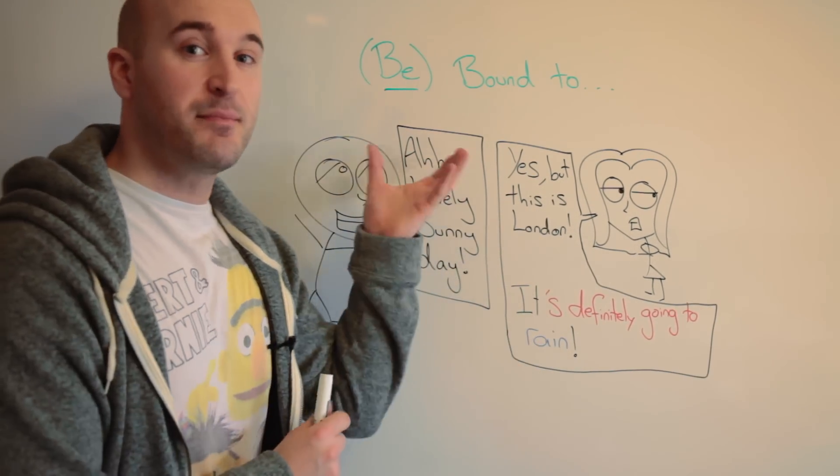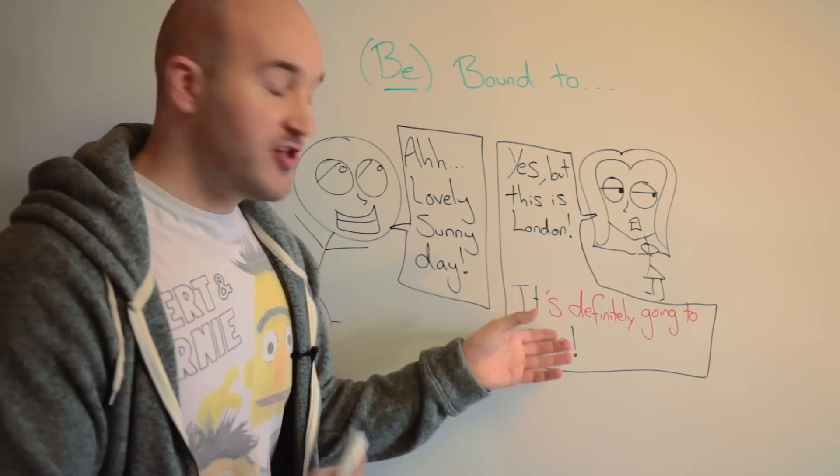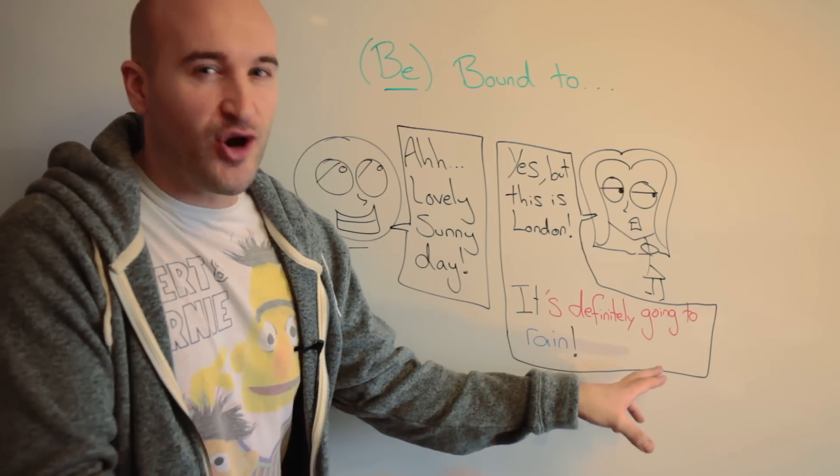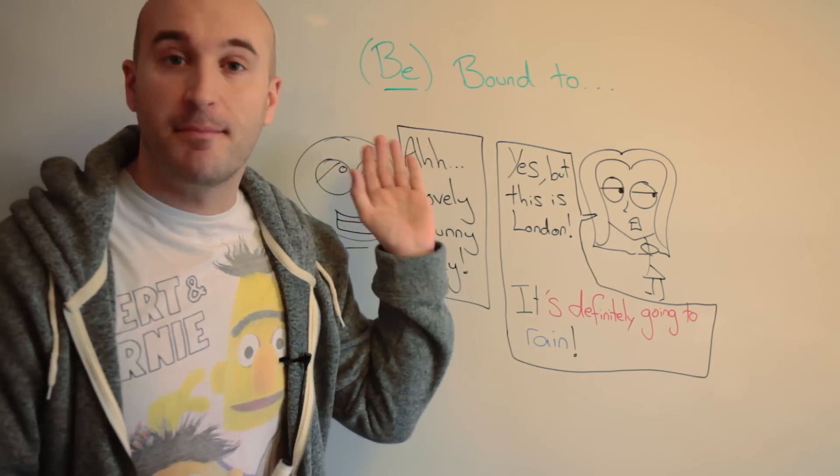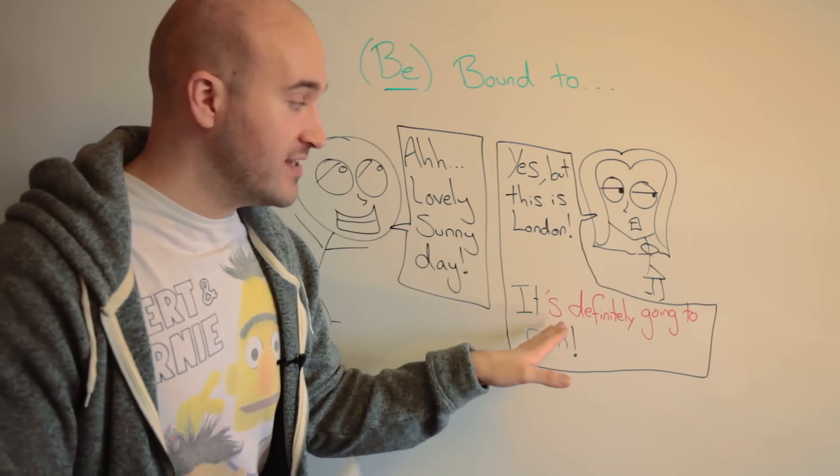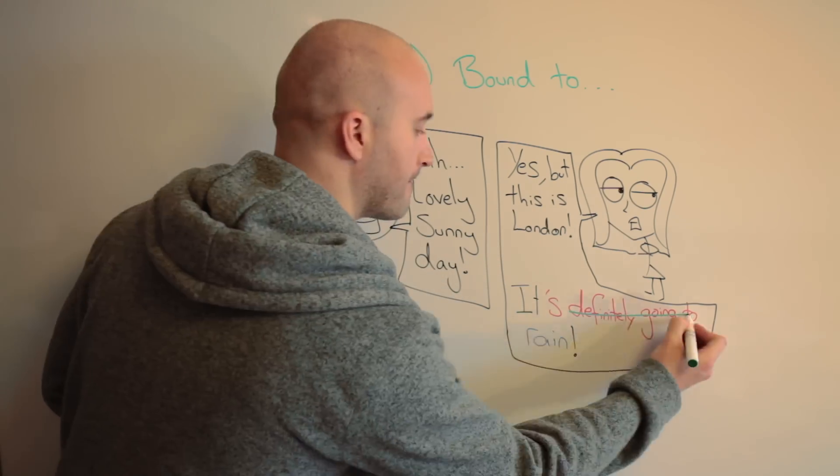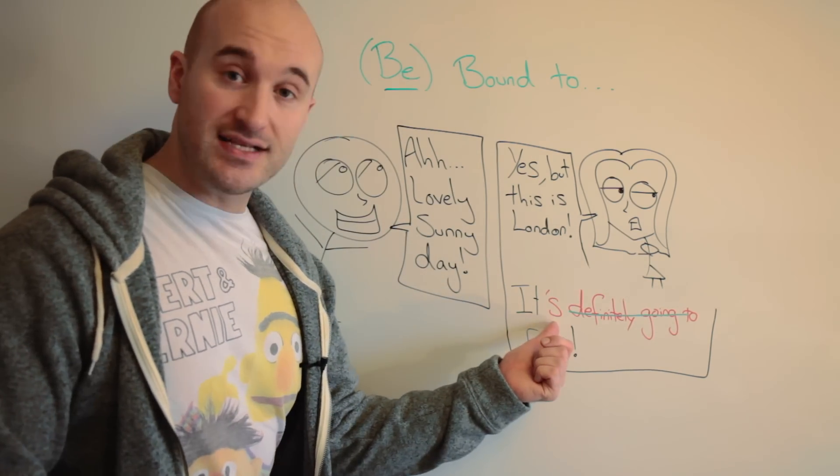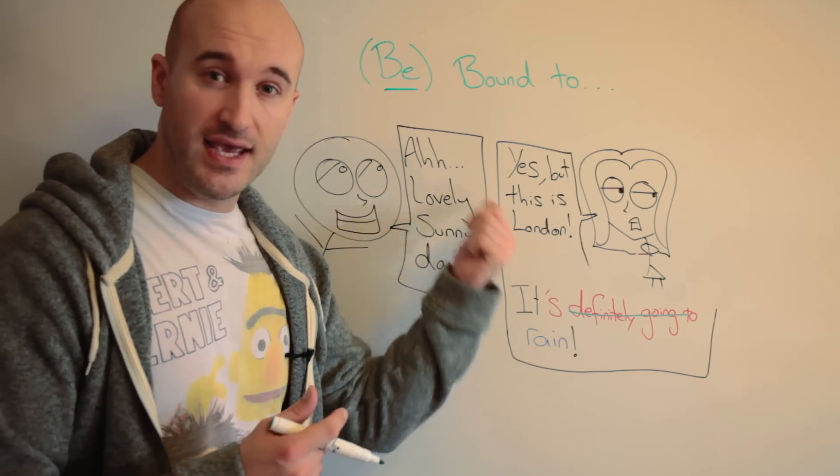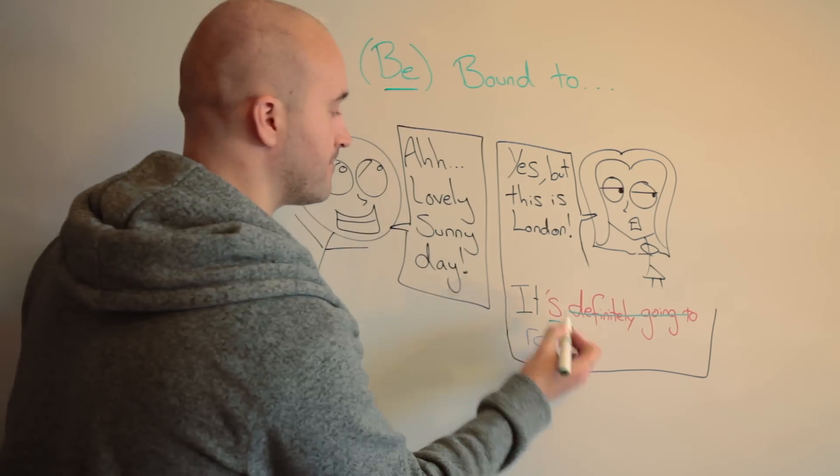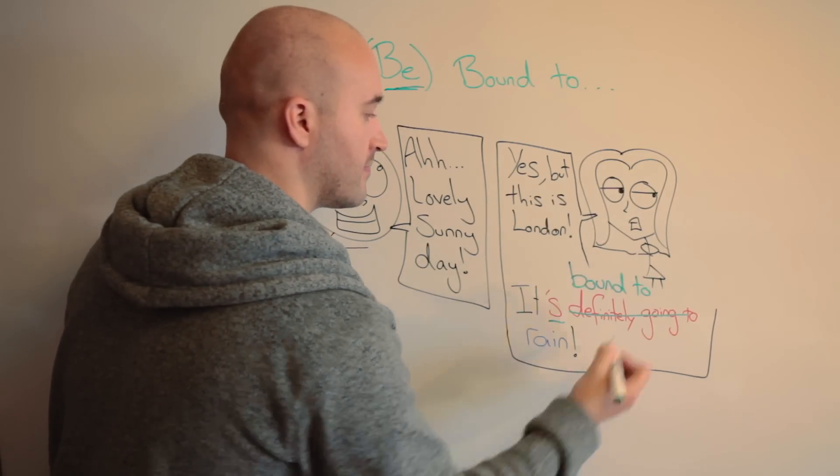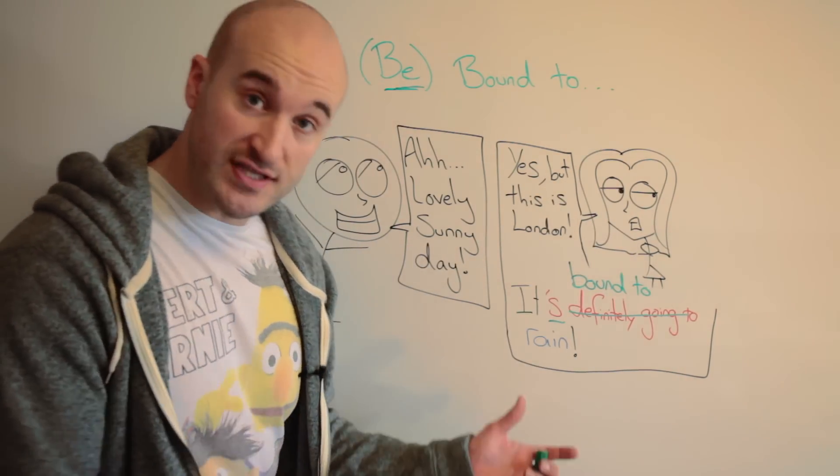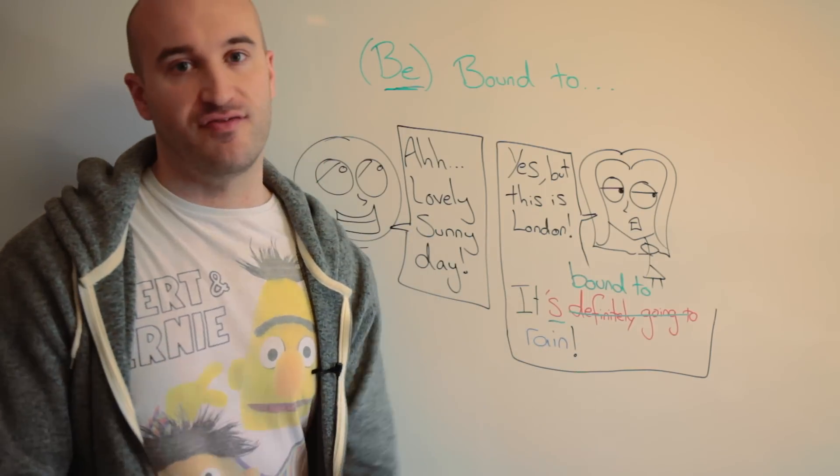And this is why we'd use be bound to do something. You want to say it's definitely going to. I know it will happen. That's when you use be bound to. So we change it's definitely going to. We've already got it is, that version of be, so we keep that. But definitely going to, we replace it with bound to. So the whole sentence, it's bound to rain.